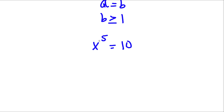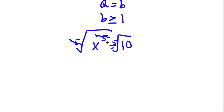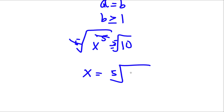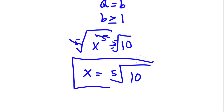Now, to get rid of this power of 5, I'm going to take the fifth root on both sides. So these two cancel out, and I'll be left with x is equal to the fifth root of 10. So this is our answer.